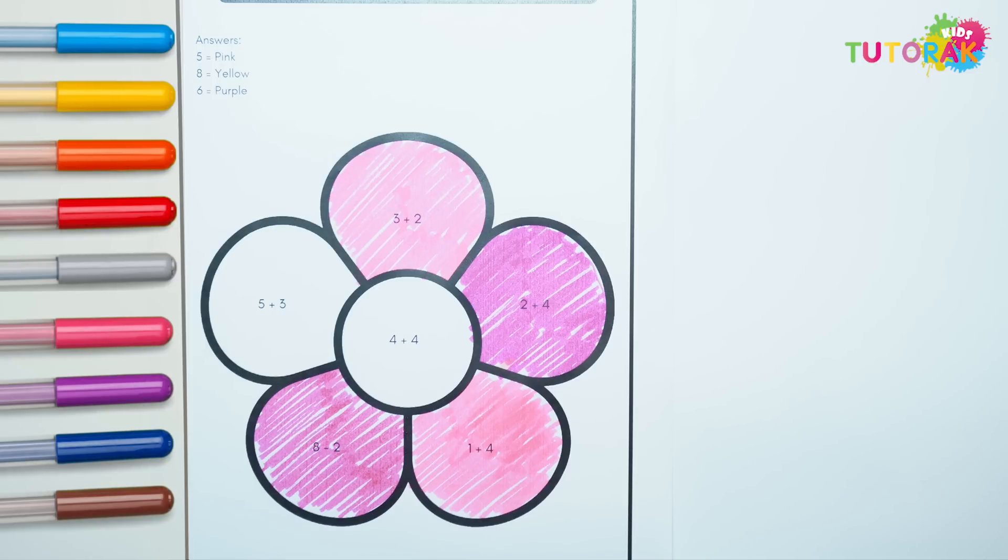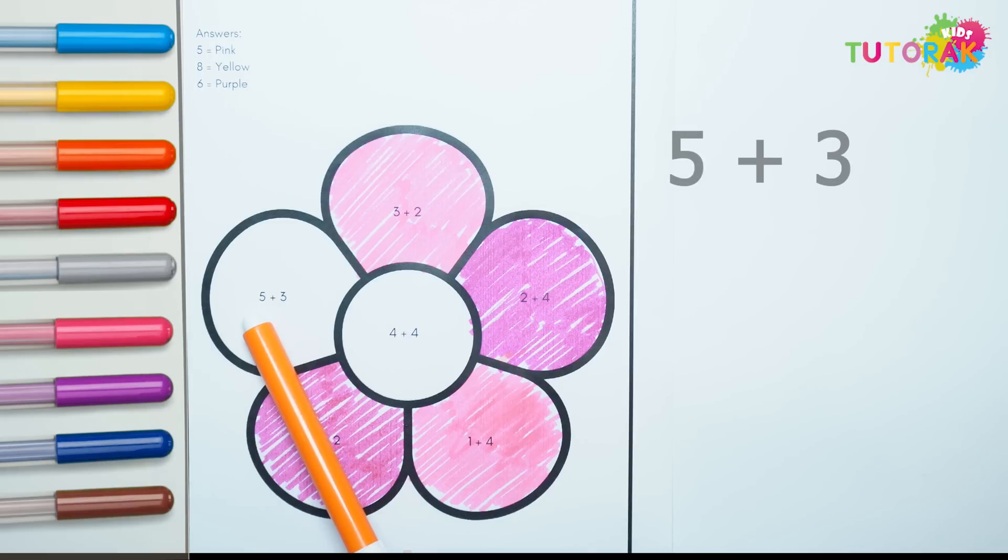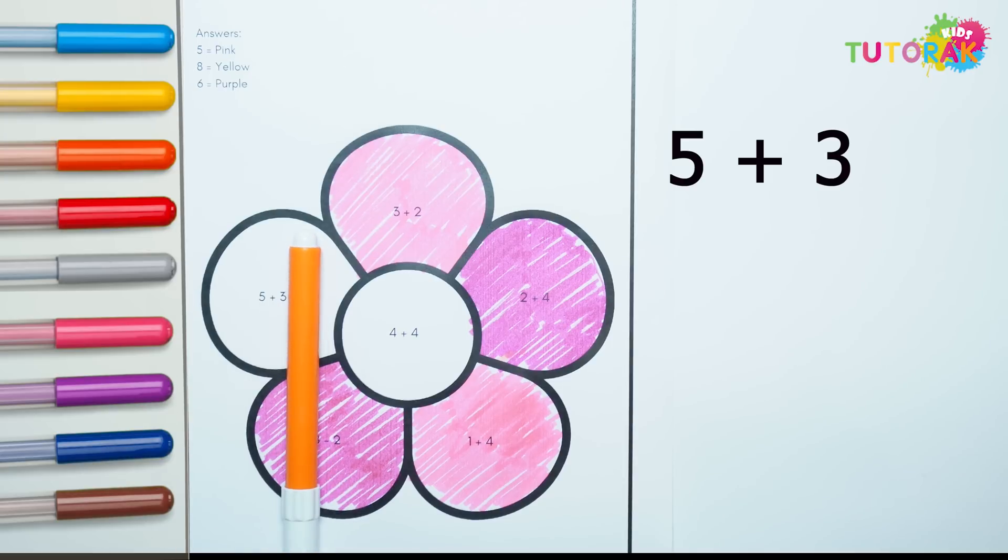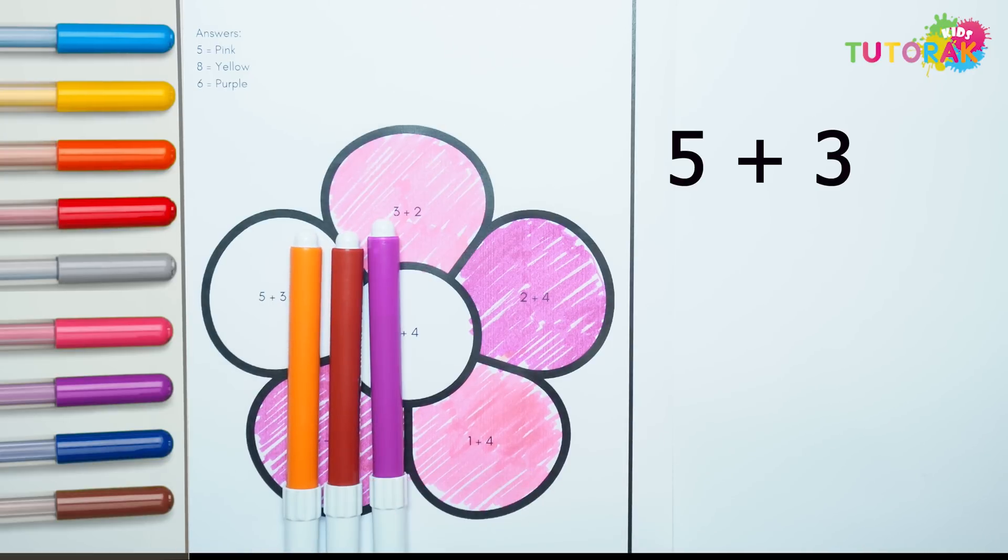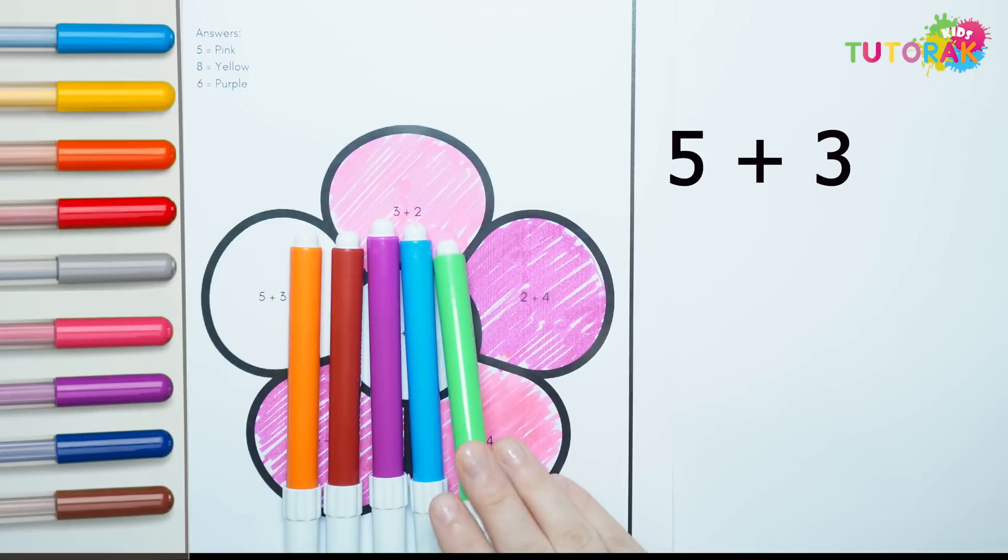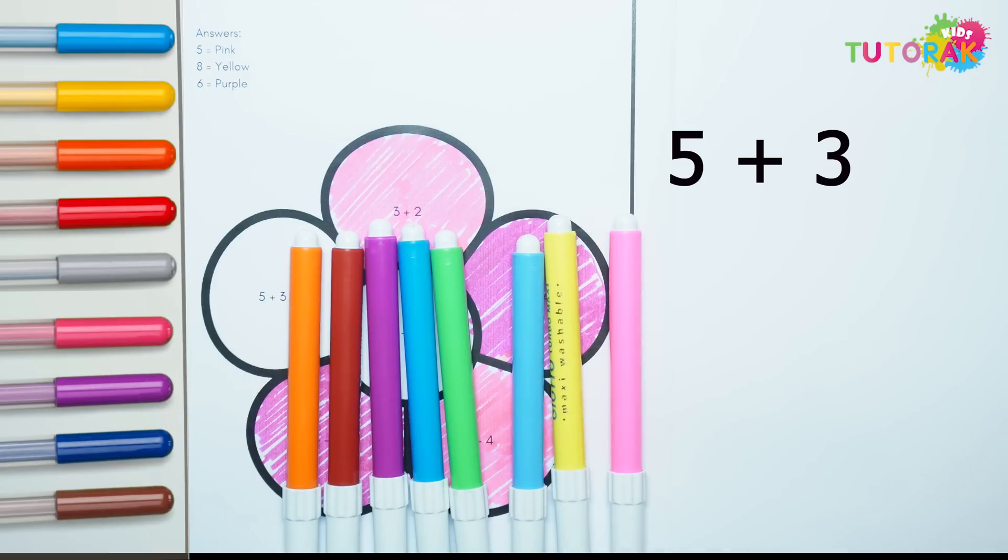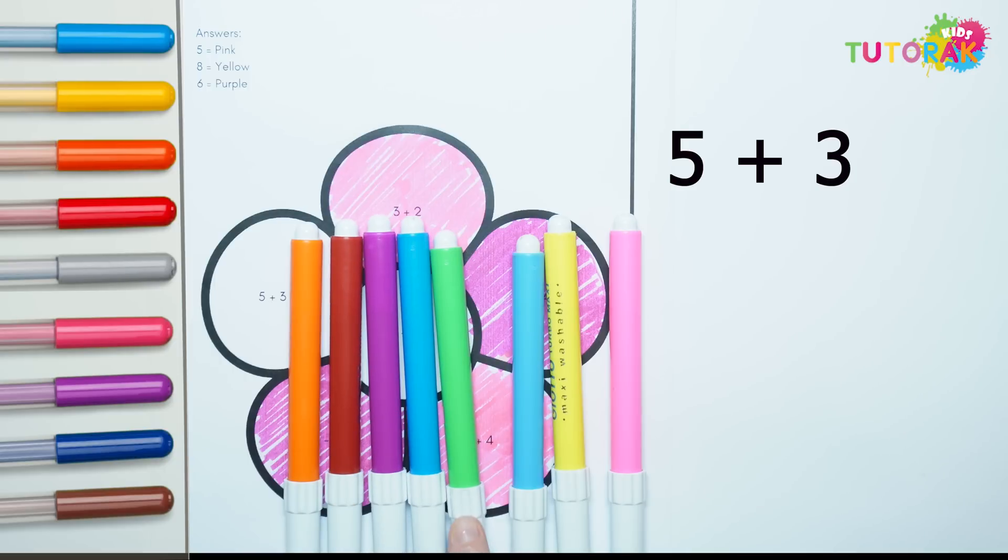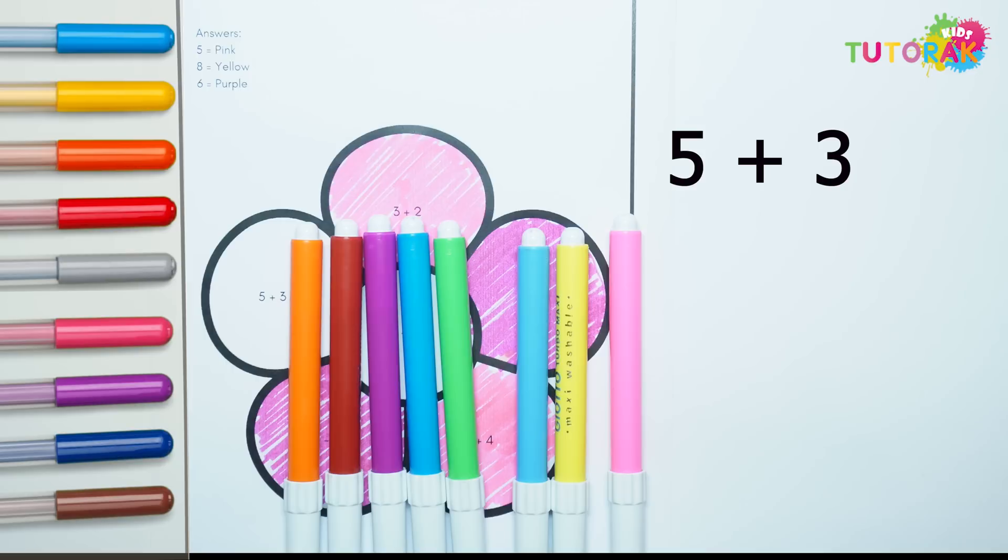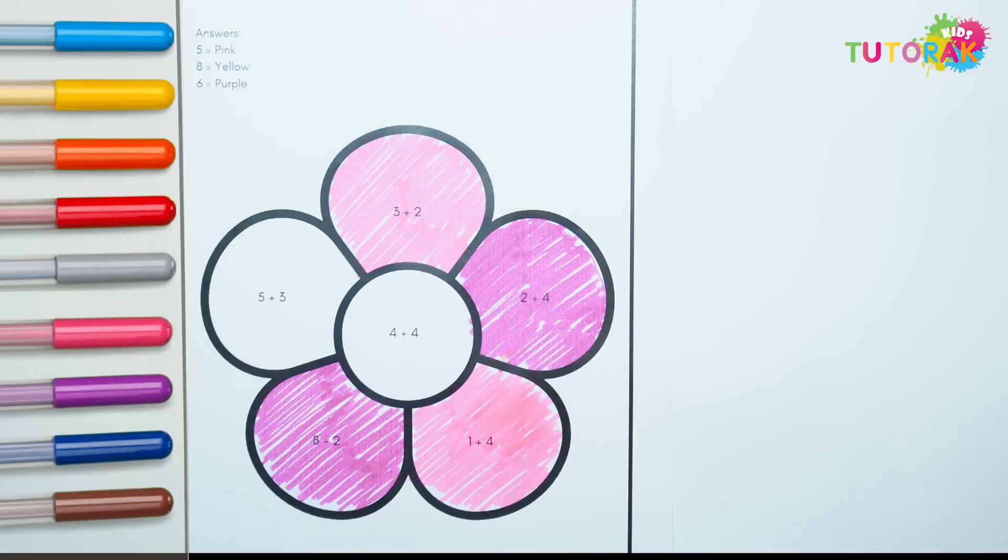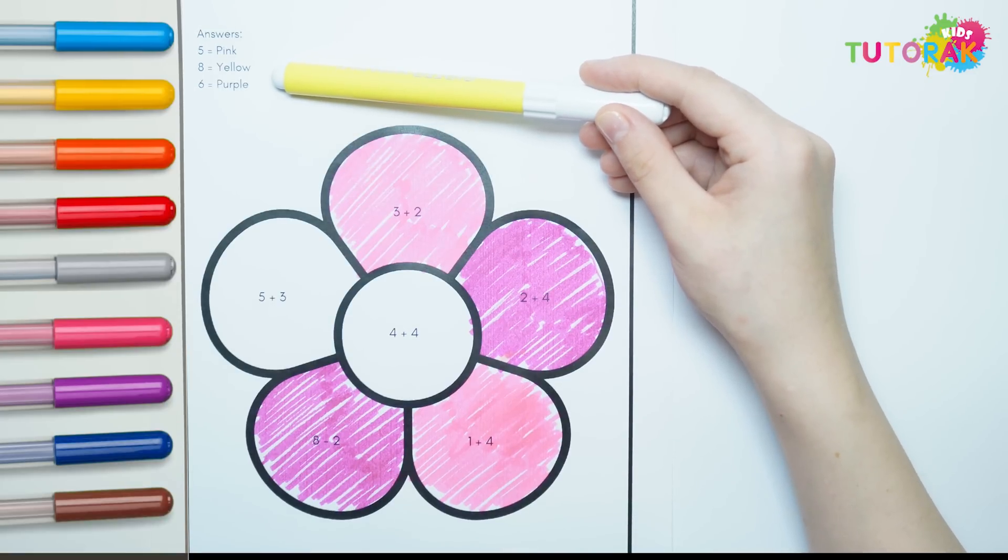2 more to go. So now we have 5 plus 3. Let's count. 1, 2, 3, 4, 5. 5 plus 1, 2, 3. How much is that? 1, 2, 3, 4, 5, 6, 7, 8. The answer is 8, and number 8 is color yellow.